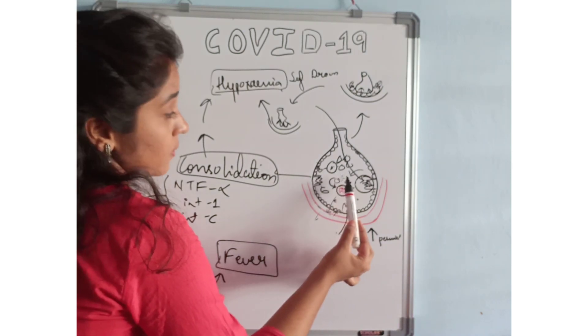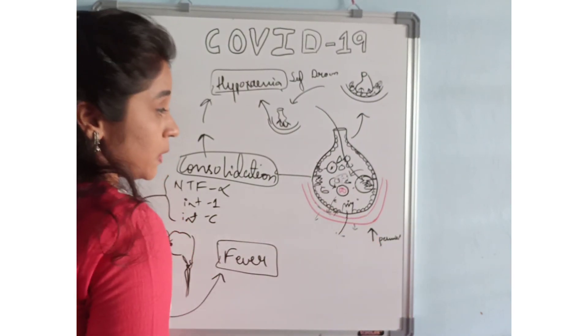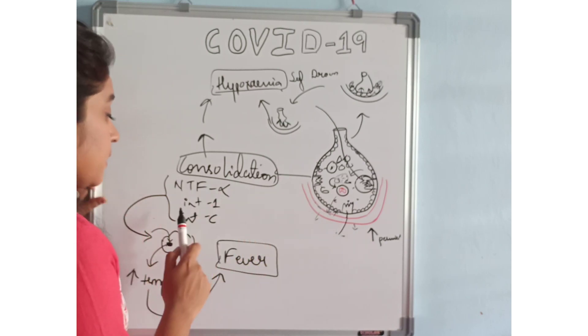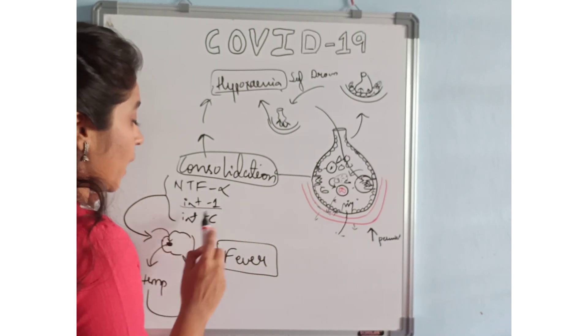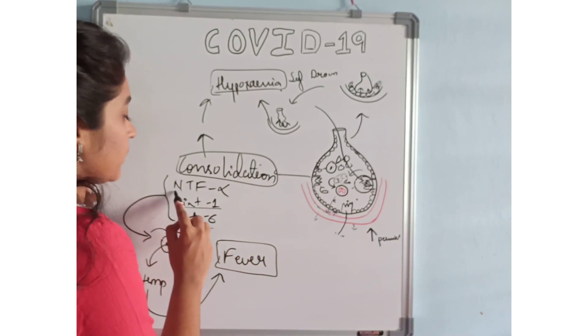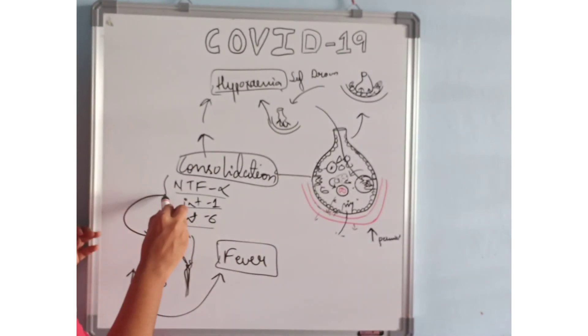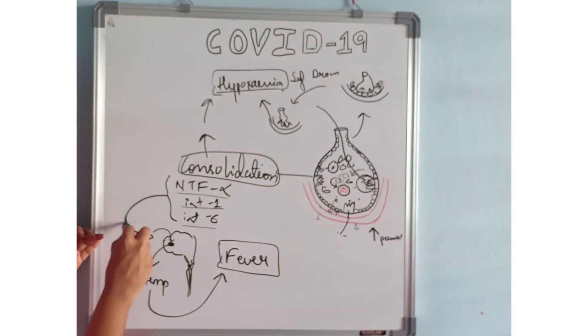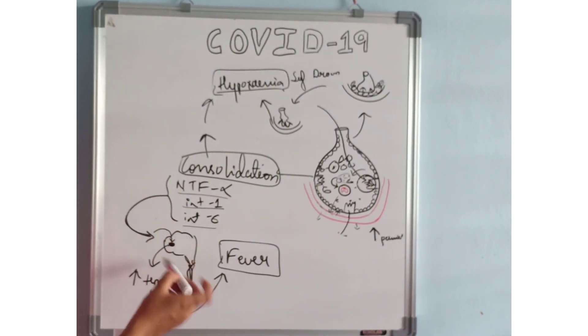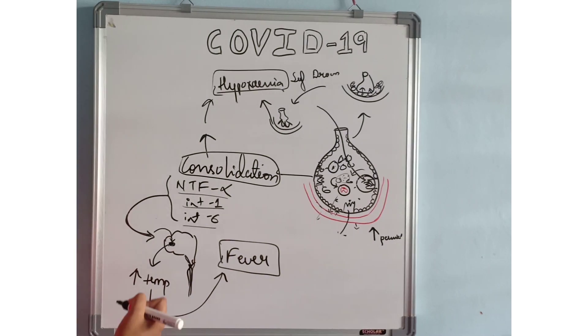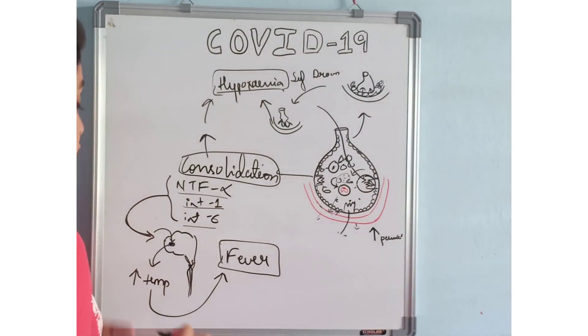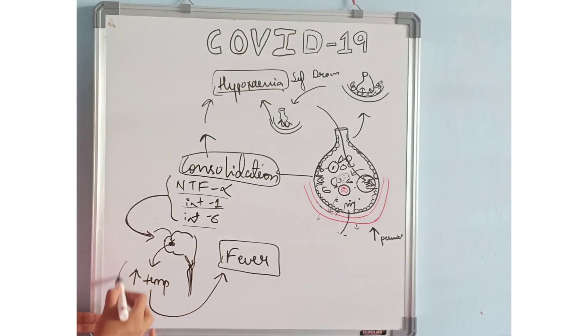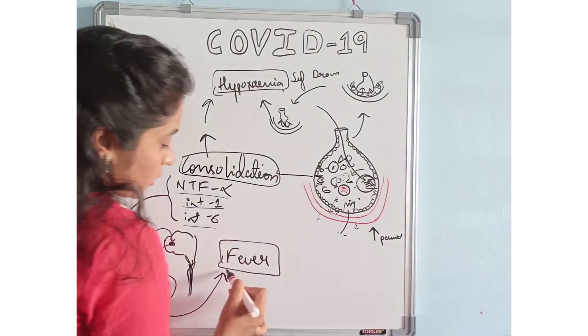As there are a number of inflammatory mediators released—interleukin-1, interleukin-6, and tumor necrosis factor alpha—they might reach the brain, the central nervous system, and reach our hypothalamus, which regulates the temperature of the body and causes increase in temperature, which leads to fever.